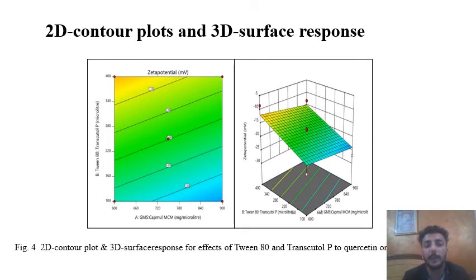These are the contour plots and 3D surface response. What these responses are saying is whenever there is increase in surfactant to co-surfactant ratio, zeta potential is increasing. And whenever factor A, GMS to capryol ratio, is increasing, zeta potential is increasing.